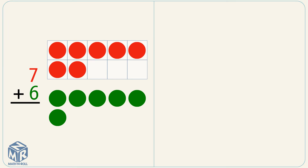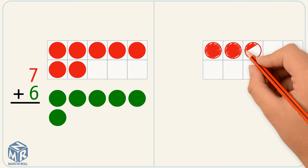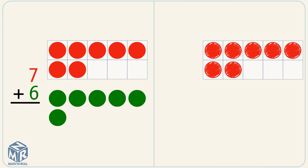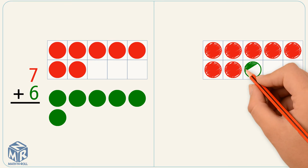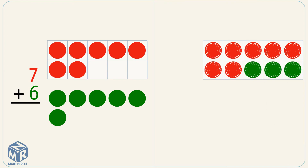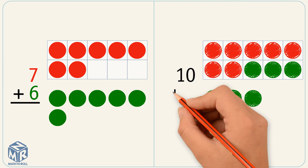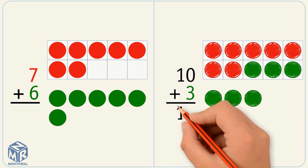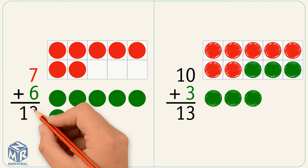Let's do another example. 7 plus 6. We have 7 red counters inside the 10 frame and 6 green counters outside the 10 frame. Let's make a 10 using another 10 frame. We start with a bigger number, 7. To make a 10, we need 3 more counters. So we add 3 green counters and we have 3 green counters outside the 10 frame. 10 plus 3 equals 13. So 7 plus 6 equals 13.